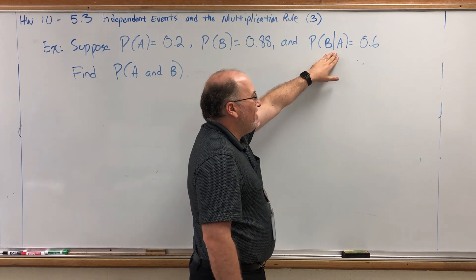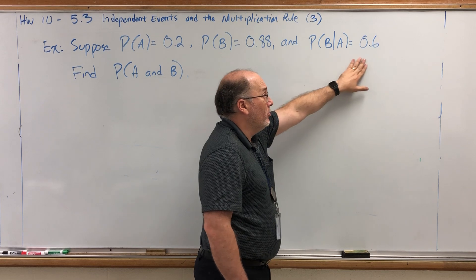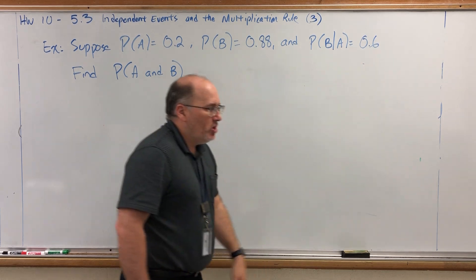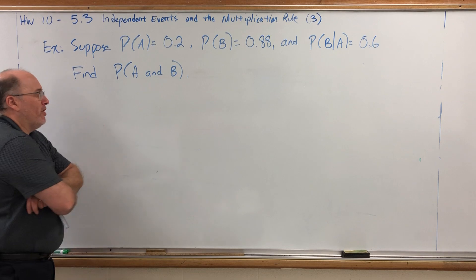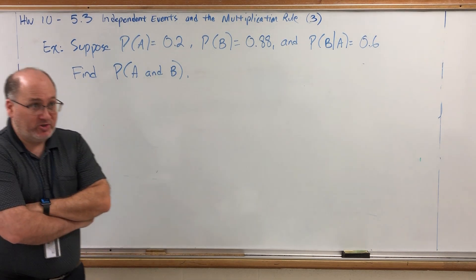and the probability of B given that A has already occurred is 0.6 or 60%, and we're asked to find the probability that A and B occur at the same time.